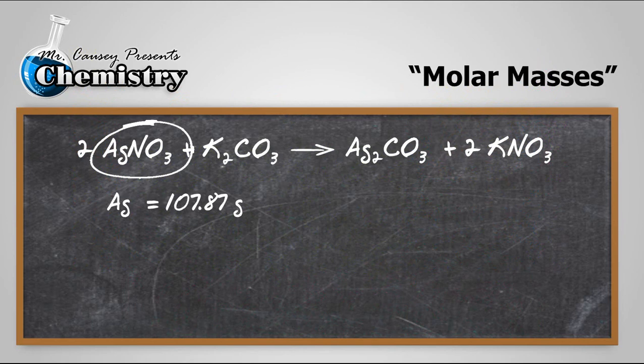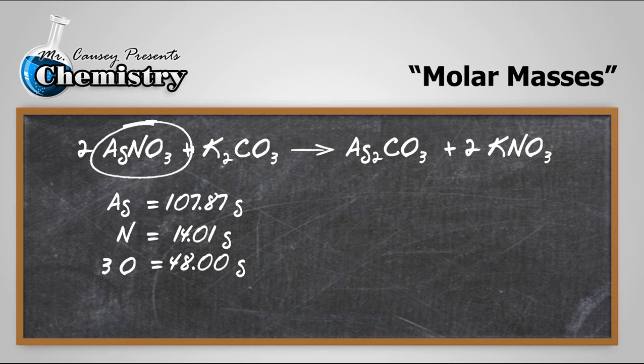Silver is 107.87 grams per mole. Nitrate, nitrogen is 14.01 grams per mole, and there are three oxygens. So we want to know what three moles would weigh, and that would be 48.00 grams. Add all those up, and we will get 169.88 grams, and we're going to go to the hundreds place.